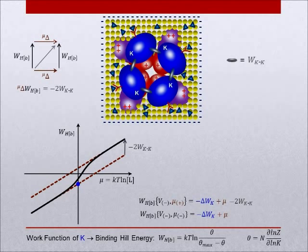Subtracting, we see that the k-k interaction energy is determined by the vertical displacement between positive and negative asymptotes.